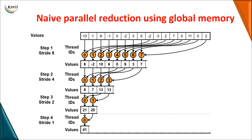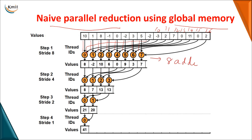Parallel reduction can be done in two ways. The first method is naïve parallel reduction, done using global memory. We have a total of 16 elements. The first eight elements are each given directly as one input to the adders, so you have eight adders from zero to seven. The second input for each adder comes from the remaining elements — the ninth element is the second input for the first adder, the tenth for the next adder, and so on through the sixteenth.